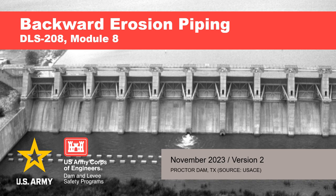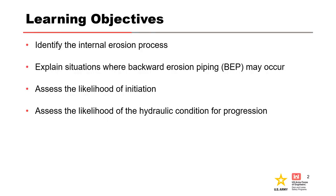This module covers backward erosion piping. The learning objectives include: identify the internal erosion processes; explain situations where backward erosion piping may occur; assess the likelihood of initiation; and assess the likelihood of the hydraulic condition for progression.